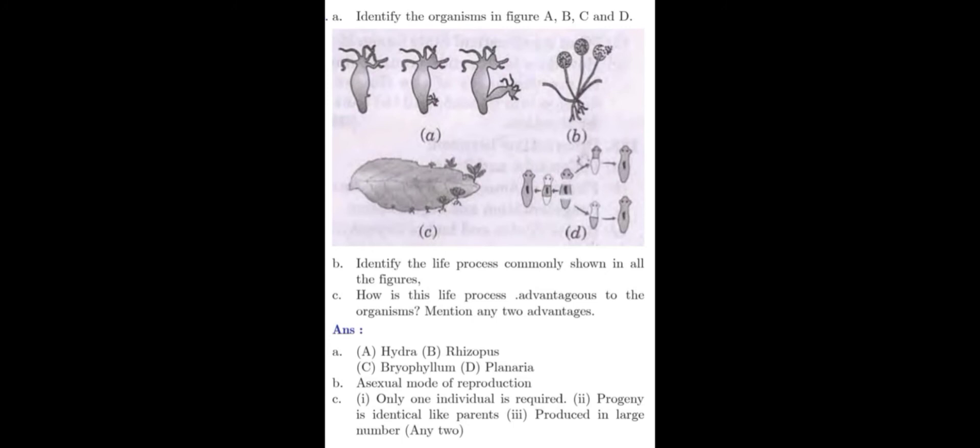The life process commonly shown in all these figures is asexual mode of reproduction. For this kind of reproduction, only one individual is required. The progeny is identical like parents. This is another advantage. And the organisms are produced in large number at a time. This is also another advantage.